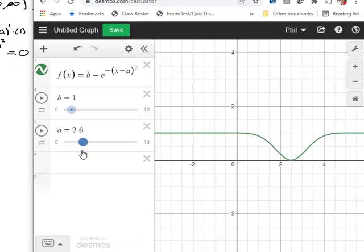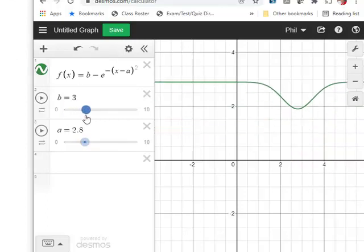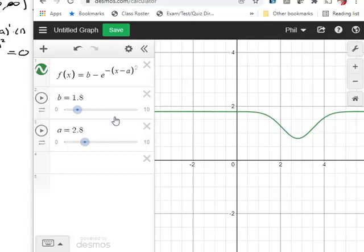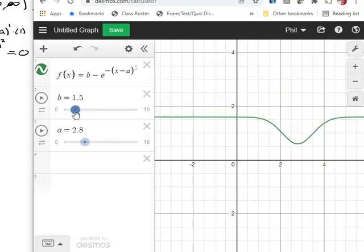Now, a was greater than zero, so we're only looking at the right half. So a is where our minimum is. b is going to give us our minimum. Because b - 1 gives us our minimum value, changing b changes what our minimum is.